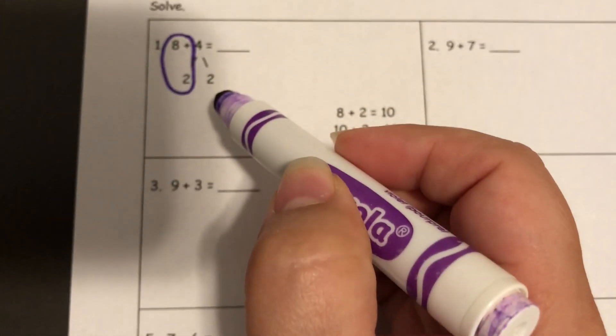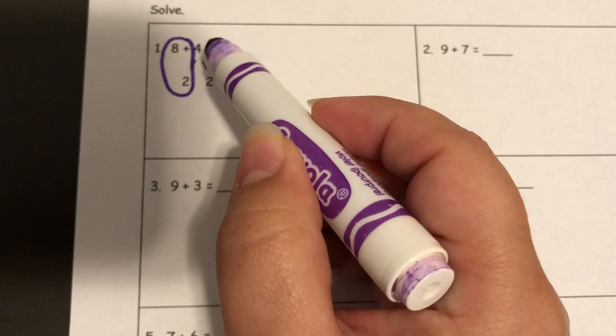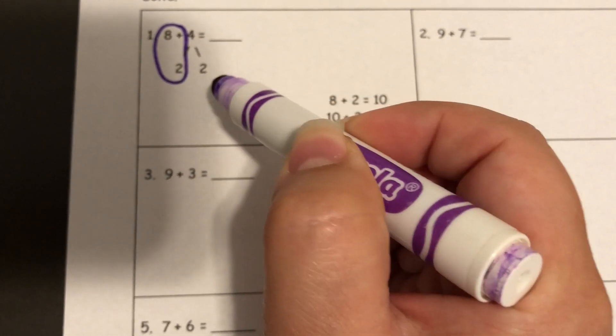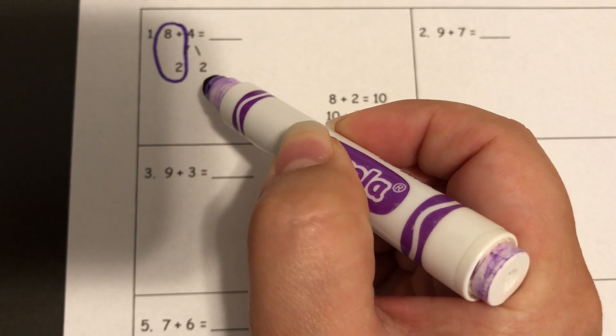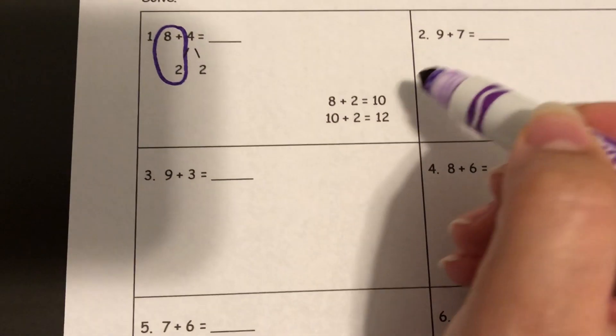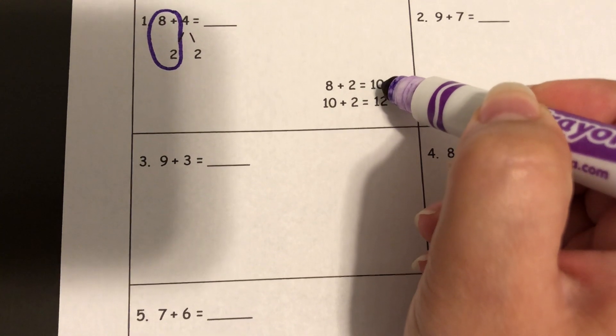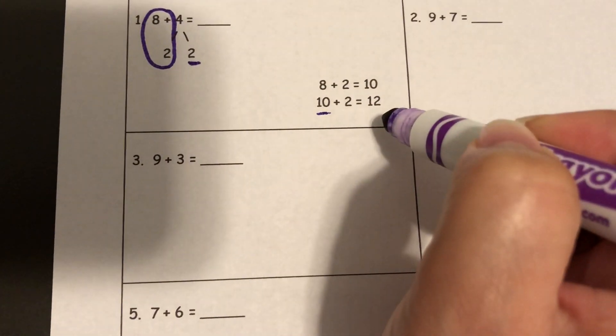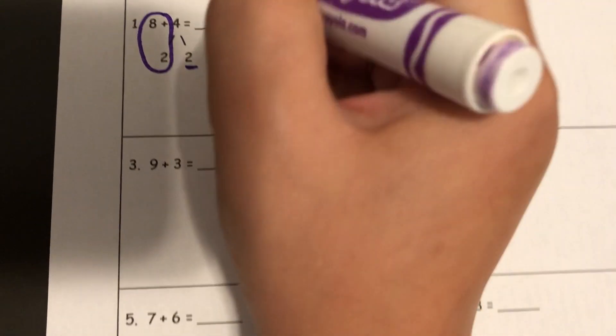Now they went back to their number bond, and they haven't added the entire 4 yet. We've only added 2 of it, which means we need to add this last 2 in. So if 8 plus 2 is 10, this 10 plus this 2 would give us 12 as our answer.